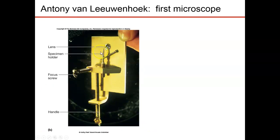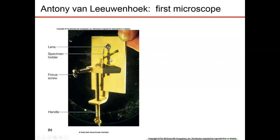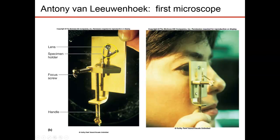This is what his microscope looks like — very small, one lens, can magnify about 200 times whatever you're looking at. You look through it with one eye through the lens, and you use just sunlight to see whatever it is you're looking at.